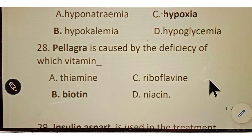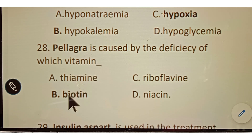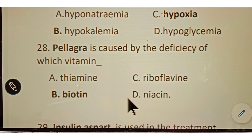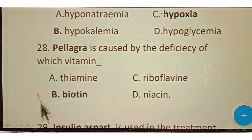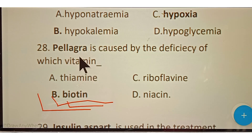Question number twenty-eight: Pellagra is caused by the deficiency of which vitamin? Options given: A. Thiamine, B. Biotin, C. Riboflavin, D. Niacin. The correct answer is option B, Biotin. Pellagra occurs due to Biotin deficiency.